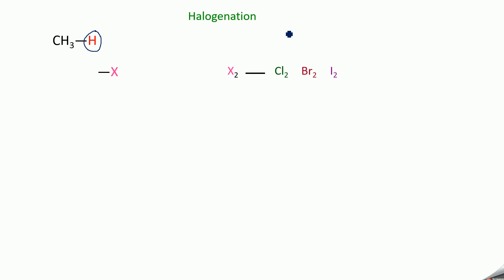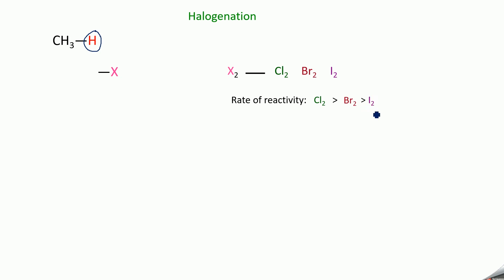Sometimes explosion will take place with fluorine. The rate of reactivity: chlorination is very fast with alkanes, then comes bromine, then comes iodination. The iodination of alkanes is very slow due to the very large size of iodine. So this is about the rate of reactivity.